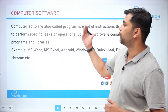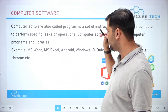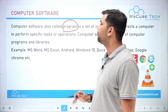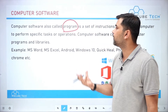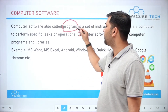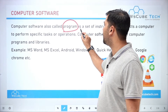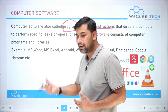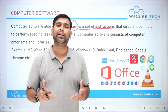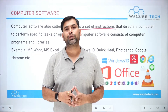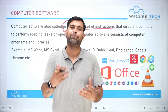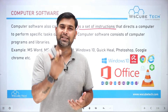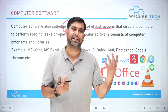Computer software is also called a program. Your computer software consists of programs and instructions. For example, if you use VLC software to watch movies, that is a software.